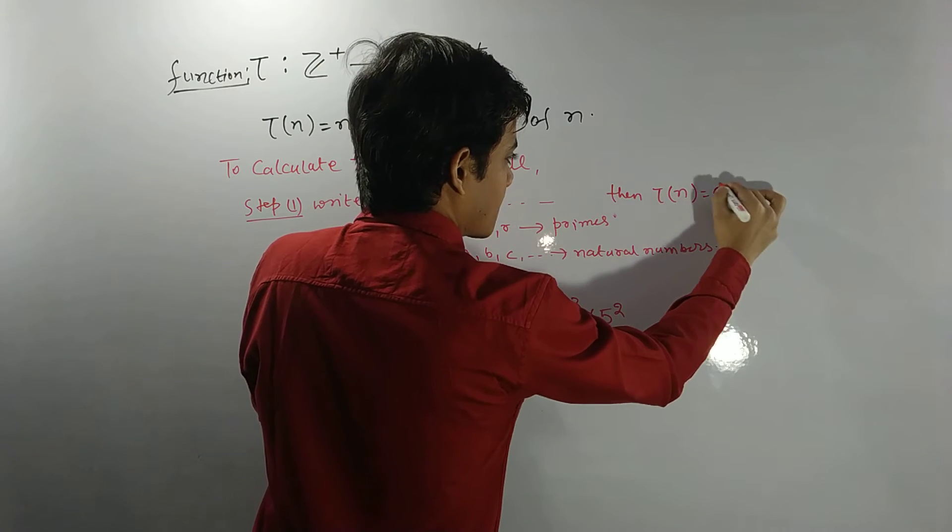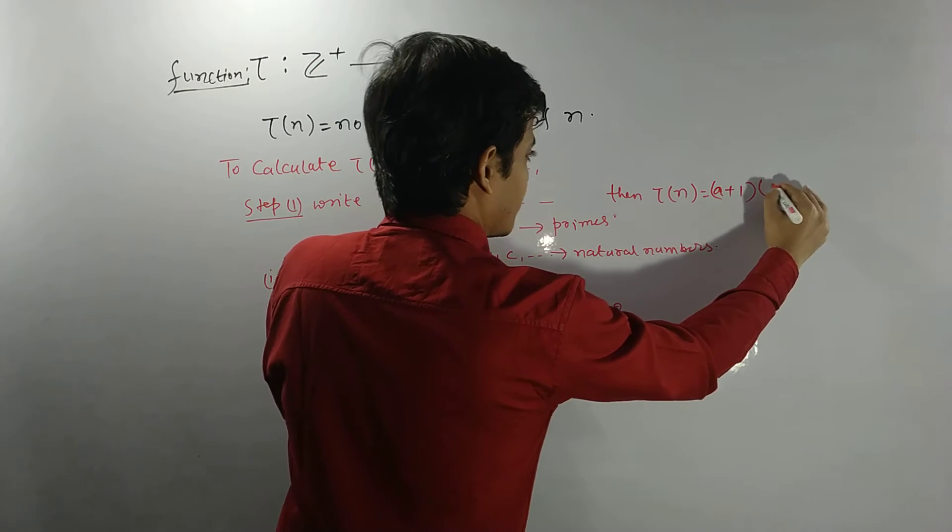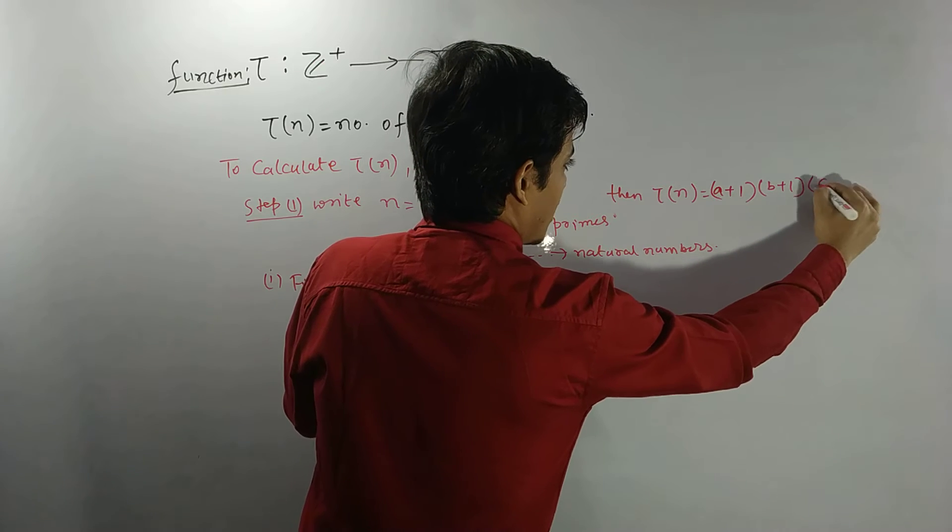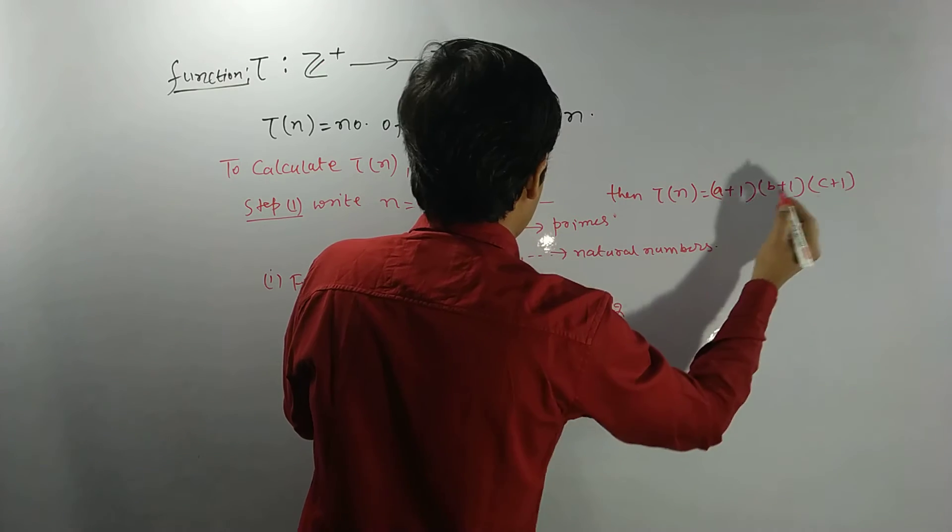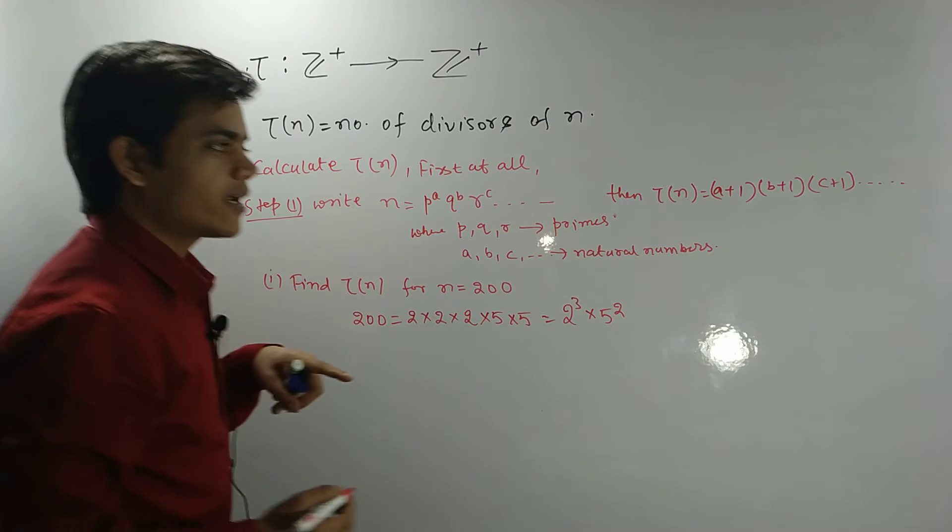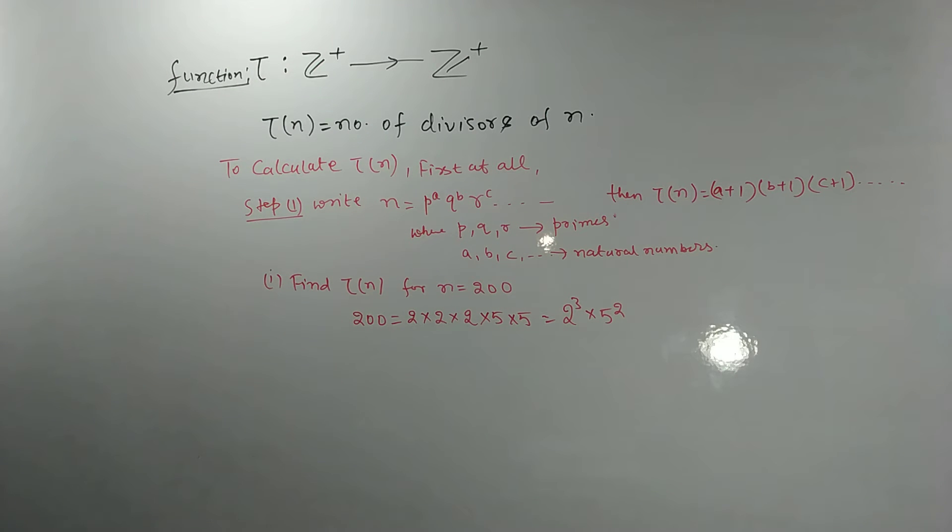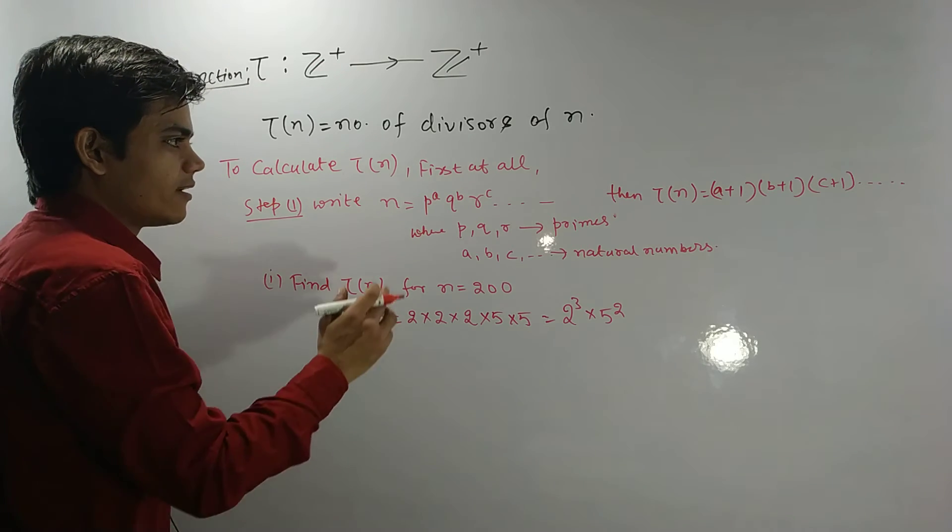Then Tau(n) is what? Just these are important: just add 1 in a, 1 in b, and 1 in c, and so on. Alright. So this is the formula for Tau(n).